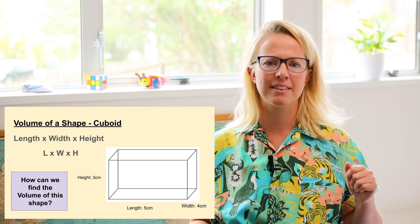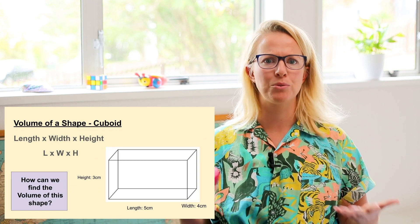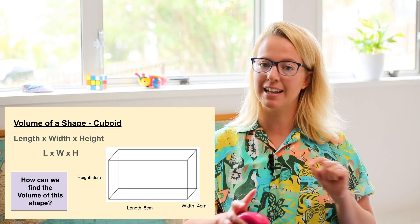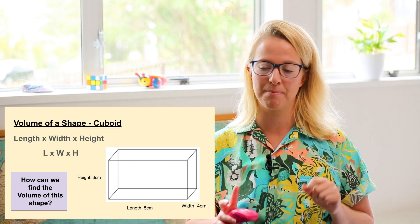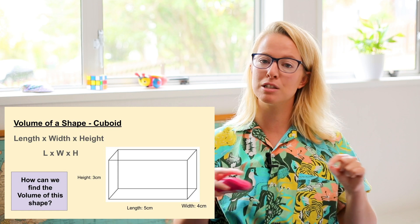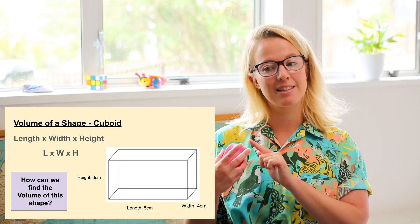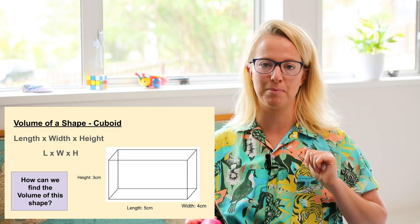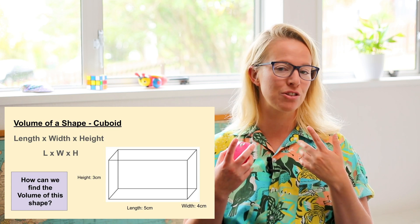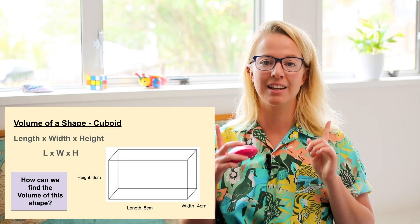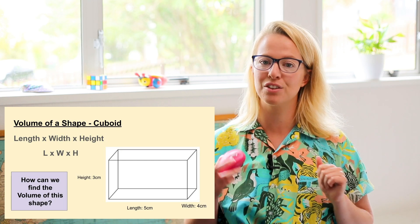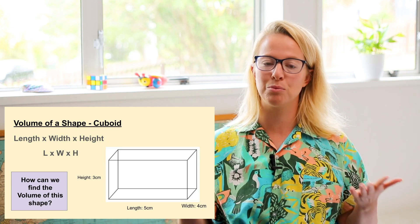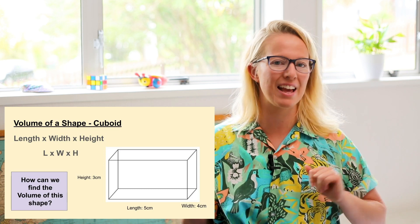You might be thinking: what do I mean by length, width, and height? If we look at this shape, we can see they're labeled. The length is the longest bit along the bottom, the width is how wide the shape is, and the height is how tall the shape is. Make sure when you're looking at a shape you're finding the correct measurements for length, width, and height. I've labeled them for you because we're learning at the moment.